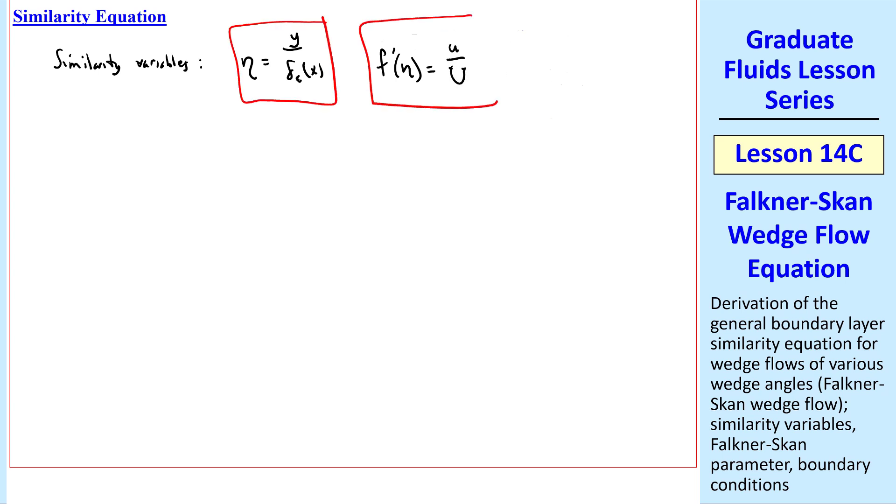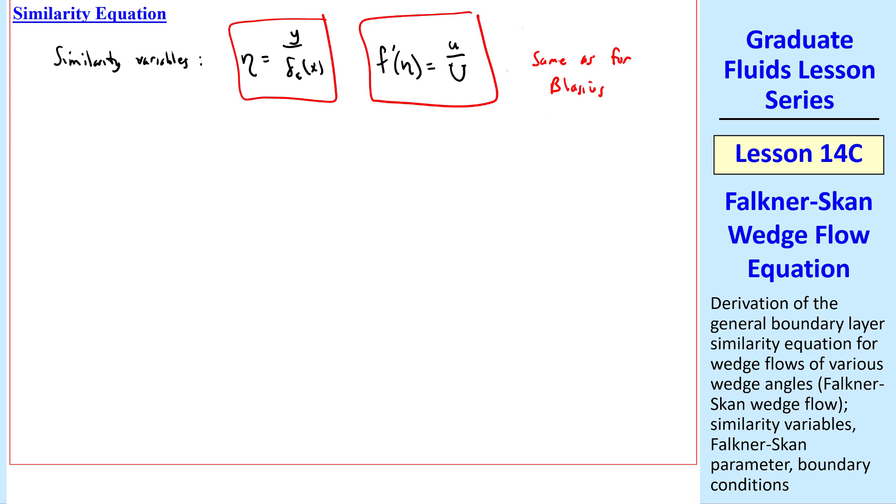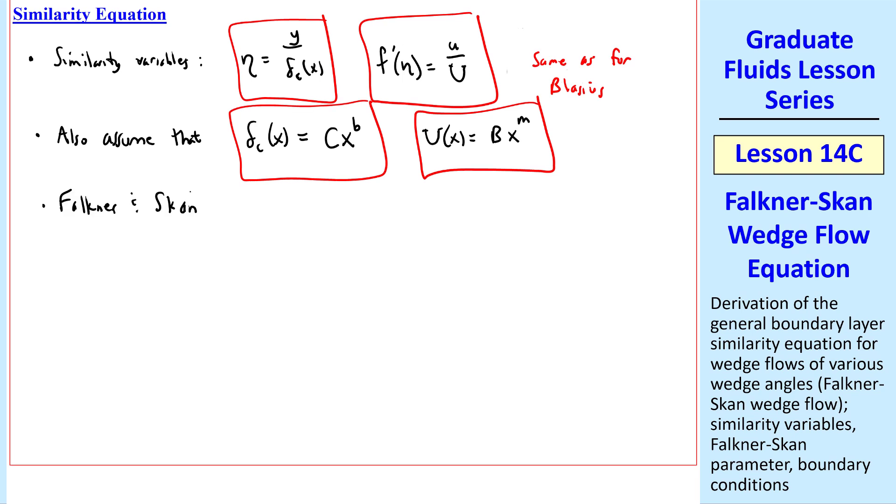You may notice that these are identical to those for the Blasius case. We'll also assume that delta c is a function of x and goes like x to the b. And we've already said that U of x is a power law function that we've discussed previously, where b and m are not necessarily the same exponent, but c and b here are also constants. Two researchers named Falkner and Skan were the first to derive this similarity solution, and we now call these Falkner-Skan wedge flows.